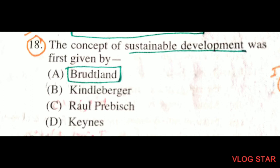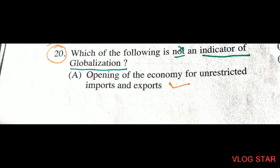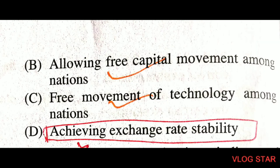Question number 18: the concept of sustainable development was given by Brundtland. Question number 20: which of the following is not an indicator of globalization? Achieving exchange rate stability is not an indicator of globalization. The other three indicators are: opening of the economy for unrestricted imports and exports, free capital movement among nations, and free movement of technology among nations.